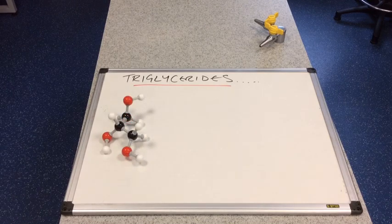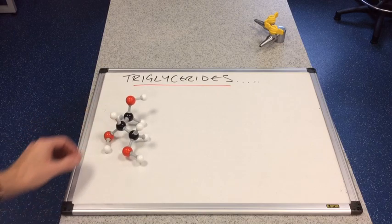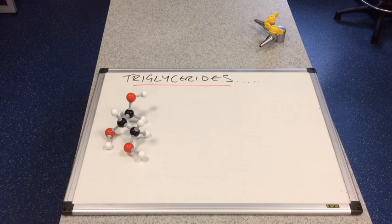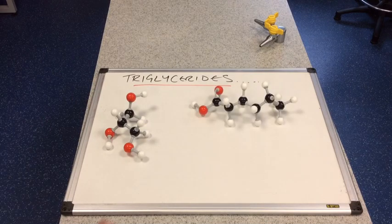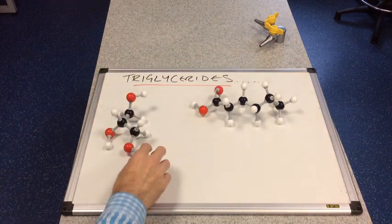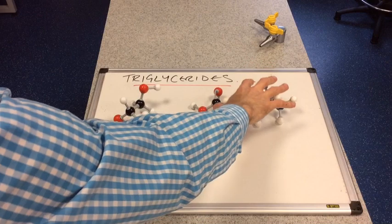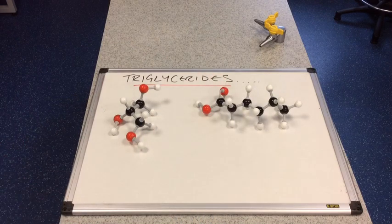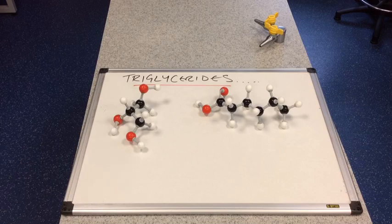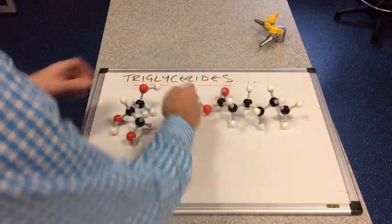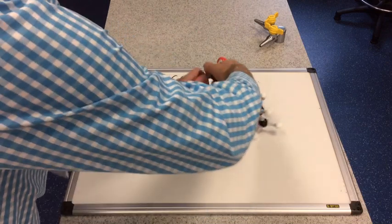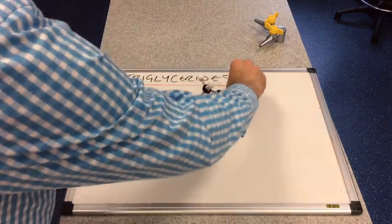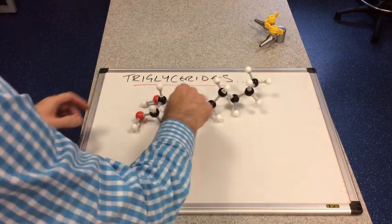So if triglycerides are esters of glycerol then how do you make an ester? You make an ester with an alcohol. Well there's the alcohol there. So a moment ago I pulled those long hydrocarbon chains off the triglyceride. And what I've done is I've turned one of them into a carboxylic acid to show you how the esters formed. So how do you make an ester? You take a carboxylic acid and an alcohol. You take a water molecule out and then join the bits together.